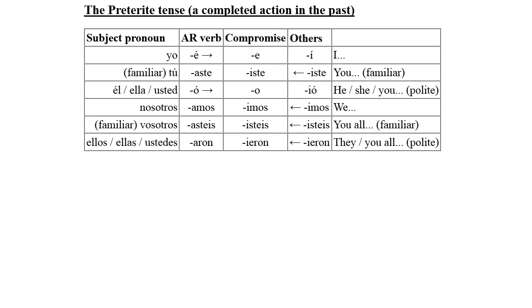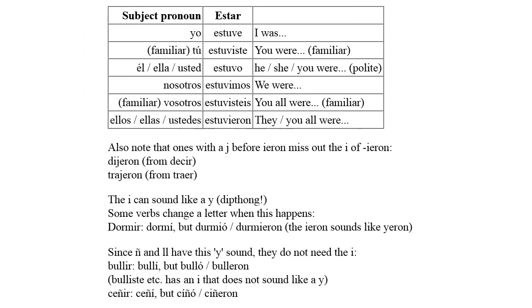Unfortunately, there are common verbs which use the endings in the compromise column. These take the I and he/she/you form from the AR verbs and the rest from the other column. They also have an irregular start. A good example is the verb ESTAR — it starts with ESTUV. Remember that the stress this time is on the penultimate syllable. I was is ESTUVE, and he/she/you were is ESTUVO — those are the endings from the AR verbs. The rest are from the other column: ESTUVISTE, ESTUVIMOS, ESTUVISTEIS, and ESTUVIERON. You shouldn't get confused with the present tense as long as you make a mental association with the ESTUV sound and the past tense.